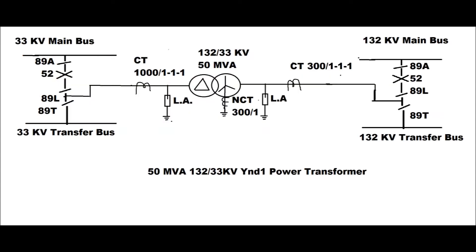The single line diagram for the 50 MVA 132/33 kV power transformer is shown in this figure. On the right side there exists the 132 kV main bus and transfer bus. On the left side there exists the 33 kV main bus and 33 kV transfer bus. 89A, 89L, and 89T are the main bus side, line side, and transfer bus side isolators respectively, for both 132 kV and 33 kV sites. The HV side CT ratio is 300/1 and the LV side CT ratio is 1000/1.